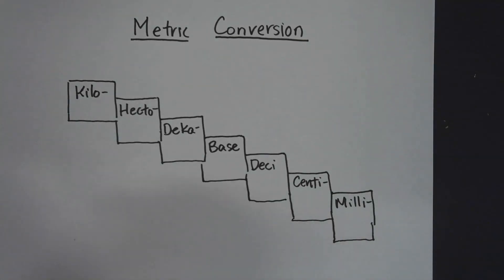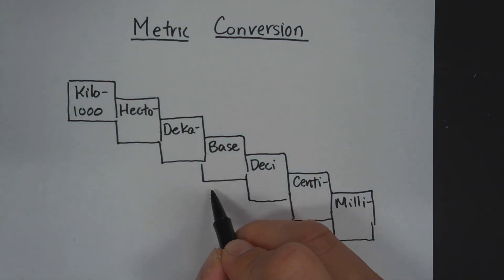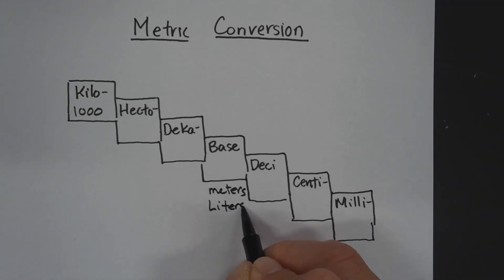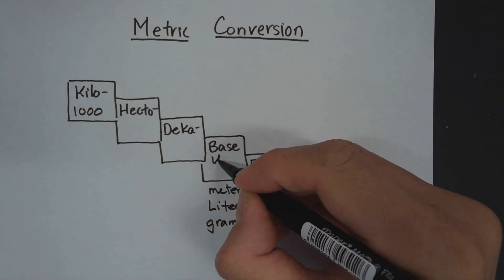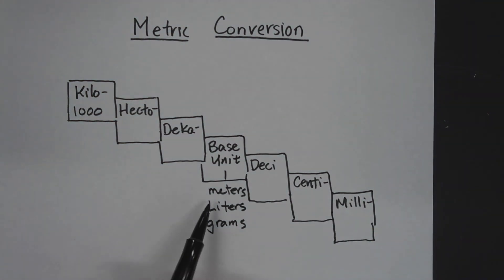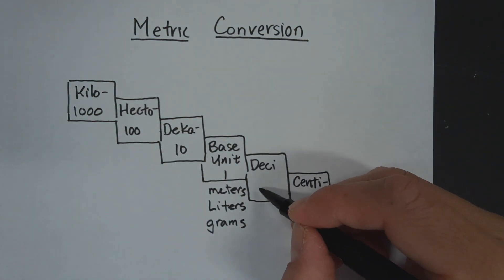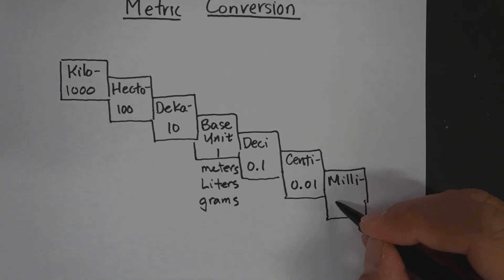First we're going to define each of these prefixes. Kilo means 1,000 — 1,000 times the base unit. The base unit could be meters if you're measuring length, liters if you're measuring volume, or grams if you're measuring mass. So the base unit we'll call one. Kilometer is a thousand meters. Hecto is a hundred times, deca is ten times, deci is a tenth (0.1), centi is a hundredth (0.01), and milli is a thousandth of the base unit, so 0.001.